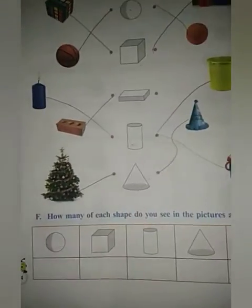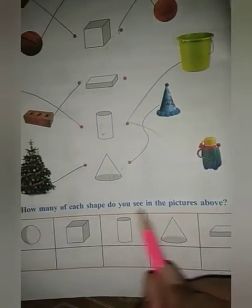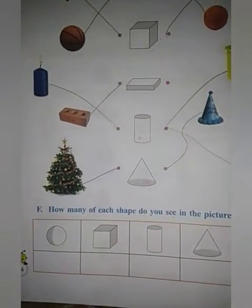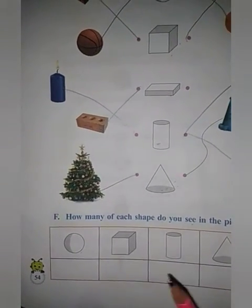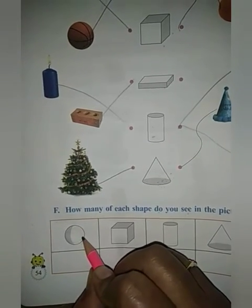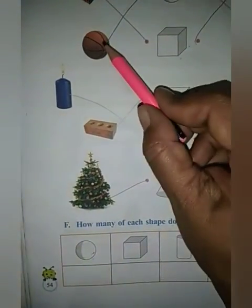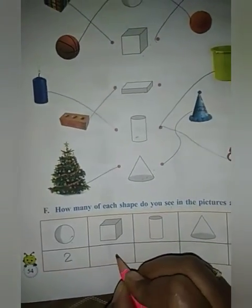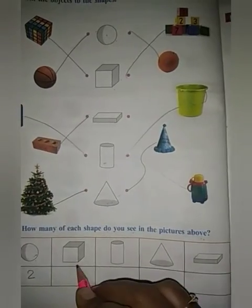I hope you all have understood. Now let us move to the next question: How many of each shape do you see in the pictures above? You have to count the number of objects of each shape. For example, this one is sphere-shaped — how many sphere-shaped objects are there? One and two. These two are in the shape of a sphere, so here you will write two. Similarly you will write the number of objects of each shape in the given boxes.